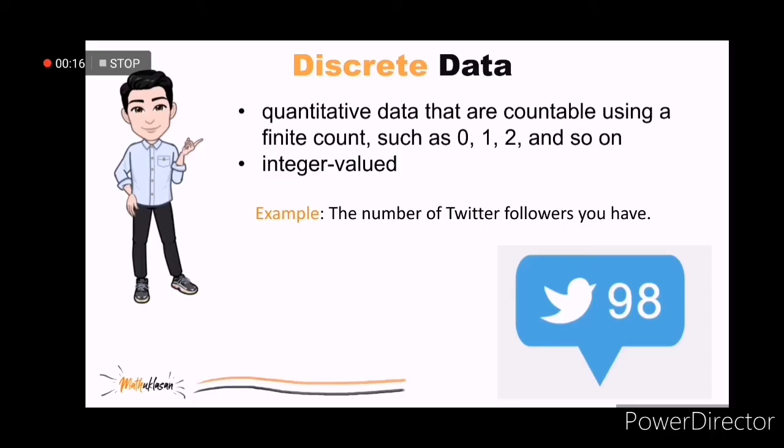So, 1.25 is not a discrete data because 1.25 is not an integer. For example, the number of Twitter followers you have is 98. So, this is discrete. Why? Because it's impossible to have 98.5 Twitter followers, right?